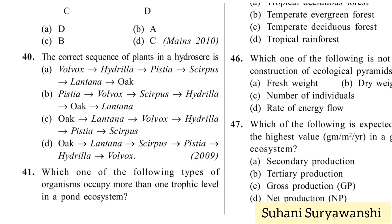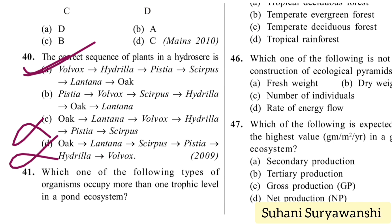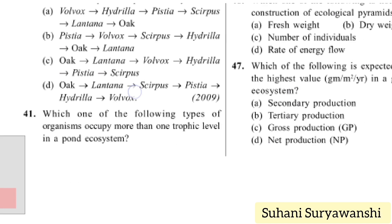The correct sequence of plants in a hydrosere is: Wolffia (alga) first, then hydrilla, then pistia, then Salix. Wolffia is an alga so it will be at the first position in the hydrosere. The correct answer is option A.